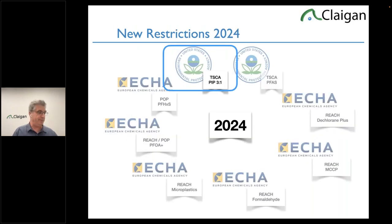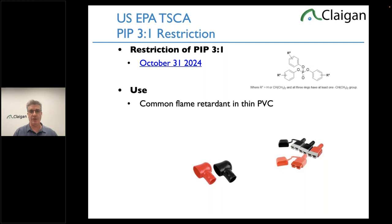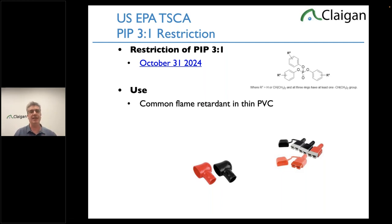On the US side under TSCA: don't forget the PIP 3:1 (phosphated) flame retardant restriction in October of next year. It's a common flame retardant in thin PVC — we typically see it in PVC sleeve boots at the ends of cables. The EPA is very enforcement-heavy on this; they have map-based tracking of enforcement actions. Make sure you address this one.